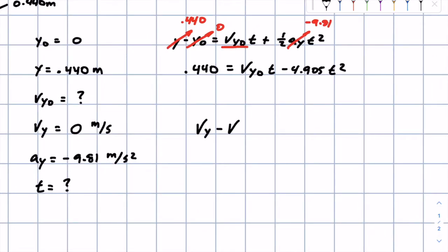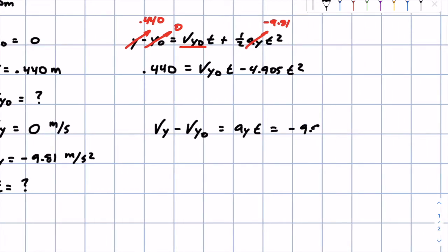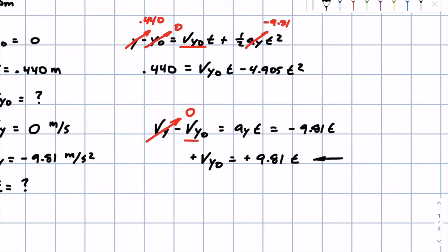Using the short equation: v_final − v_initial = acceleration × time, which gives us 0 − v_y0 = −9.81t. The negatives cancel, so v_y0 = 9.81t. We've now solved for v_y0 in terms of t, and we can substitute this expression back into the long equation.